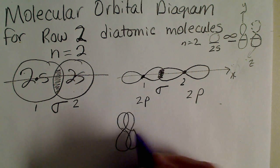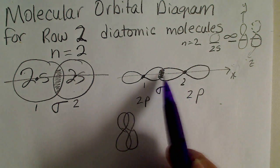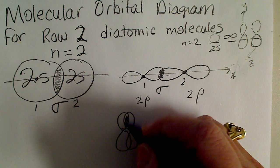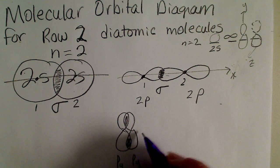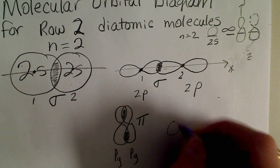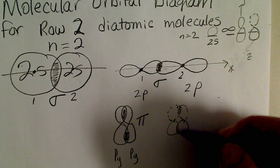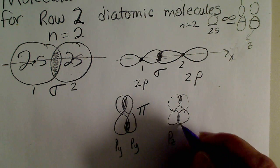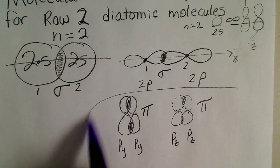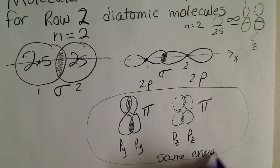When labeling the MO diagram, the 2s orbital overlap is labeled a sigma bond. One set of p orbitals will constitute a sigma bond, and then the p in the y direction gives a pi bond. The other p orbitals projecting out of the paper along the z axis will also overlap in the pi fashion. These two pi bonding orbitals have the same energy — they are degenerate.